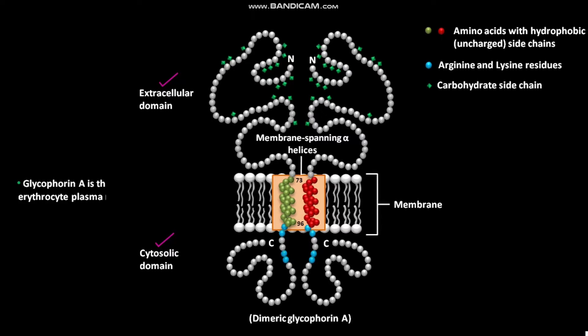Glycophorin A is the major protein in the erythrocyte plasma membrane.